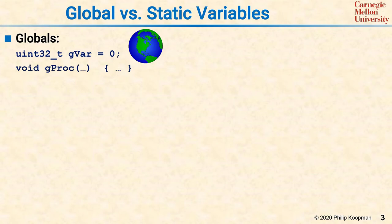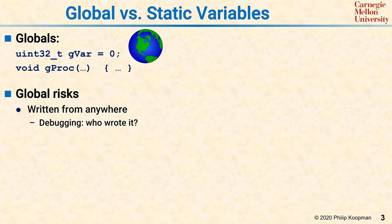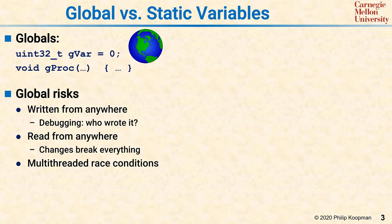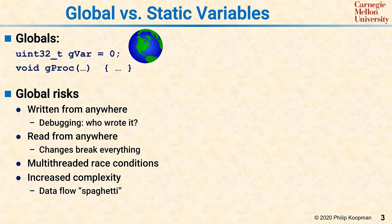Global variables have significant risks. They can be written from anywhere in your system, with multiple writers being even worse than a single writer. When you are debugging, it is common to have a problem with globals in that you cannot tell which module actually wrote an erroneous value. Globals can also be read from anywhere, meaning that if you change the behavior of a procedure writing a value, it can take a lot of work to track down all the places other procedures read that value, and can cause all sorts of bugs in unexpected places. In multithreaded or multitasking programs, globals that are shared between two threads of control can cause race conditions, and this can happen even if they're properly protected by mutex if you have logic errors. Finally, global variables increase code complexity — you can think of them as data flow spaghetti, because they make it difficult or impossible to understand and follow how data is moving throughout the system.